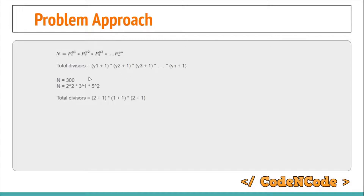Taking the example of 300 again: prime factorization is 2 raised to power 2, multiplied with 3 raised to power 1, multiplied with 5 raised to power 2. So the total number of divisors would be (2+1) × (1+1) × (2+1), which is 3 × 2 × 3 = 18.